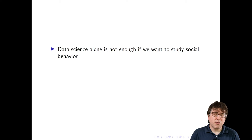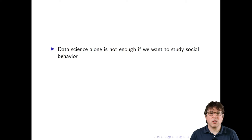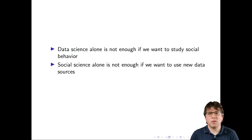The idea of social scientists and data scientists learning from and teaching each other is a great way for the computational social science community to grow. But this kind of exchange will not always be so easy. Data science alone is not enough if we want to study social behavior — if the questions are fundamentally social in nature, ideas from social science will be key in defining what the important questions are and helping answer them. Likewise, social science alone is not enough if we want to take advantage of new digital age data sources. It's really only going to be through a coming together of these communities that computational social science will thrive.